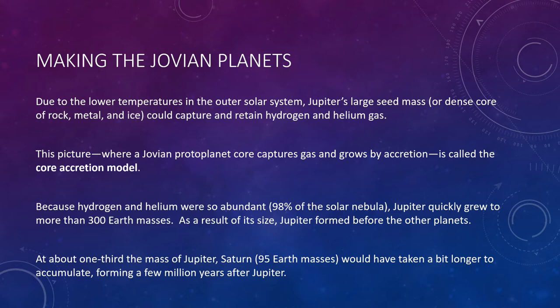The solid objects that reside in the outer solar system today—such as comets and the moons of Jovian planets—still show this ice-rich composition. However, the growth of icy planetesimals cannot be the whole story of Jovian planet formation, because the Jovian planets clearly contain large amounts of hydrogen and helium gas. The leading model, known as the core accretion model, holds that these planets formed as gravity drew gas around ice-rich planetesimals much more massive than Earth.